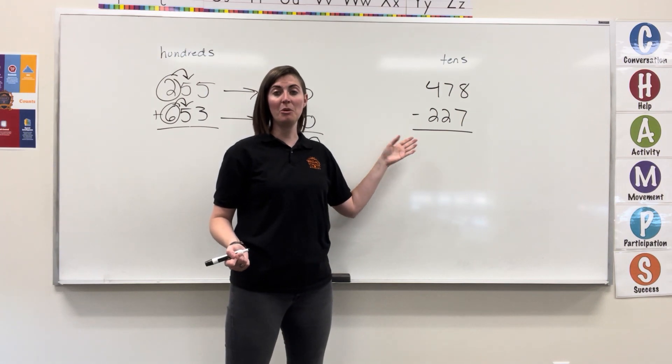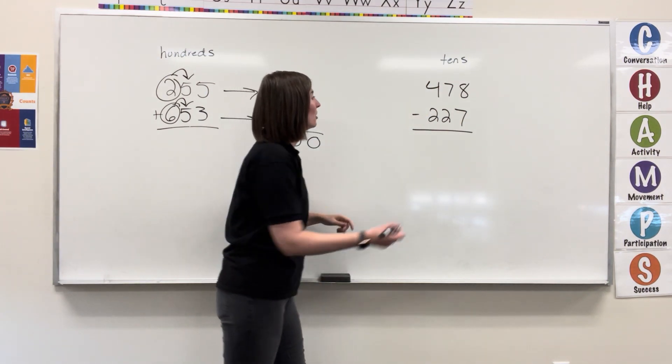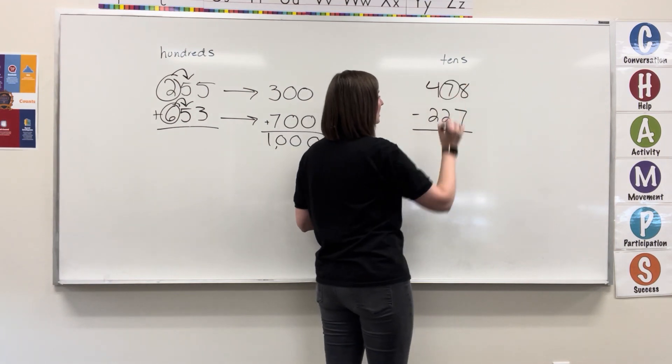Another example here, we're rounding to the tens place to find our estimate. So, if we're rounding to the tens, I'm looking at this digit.